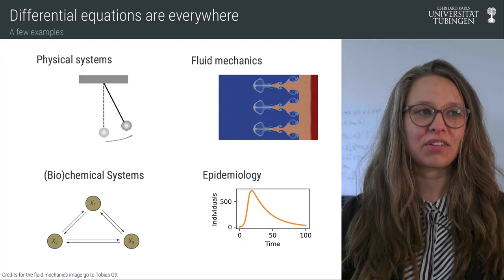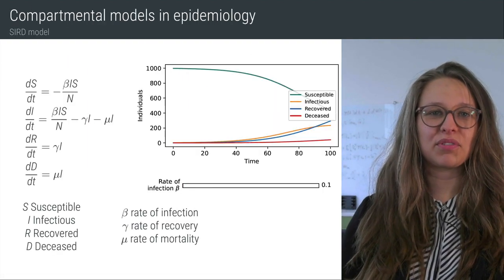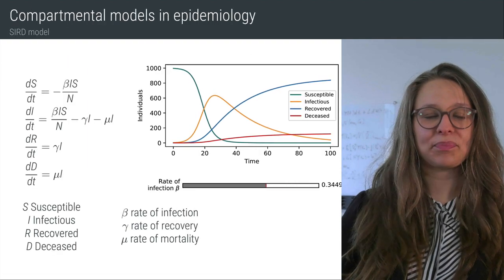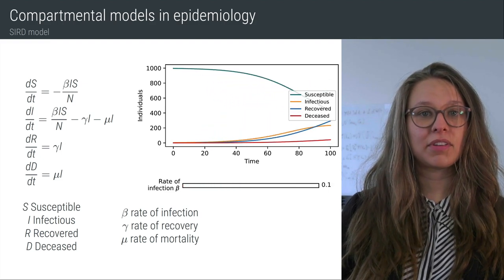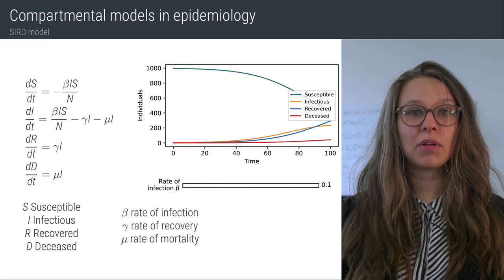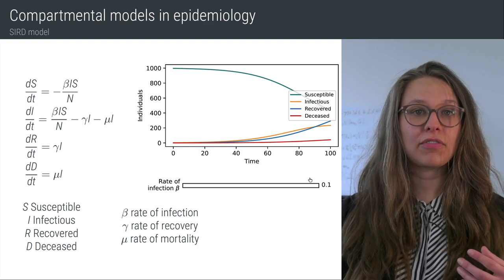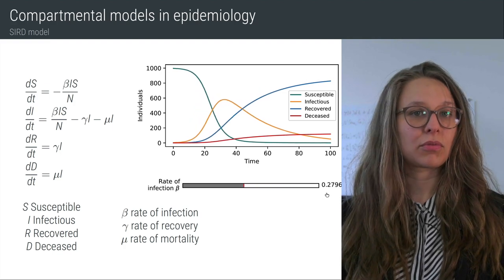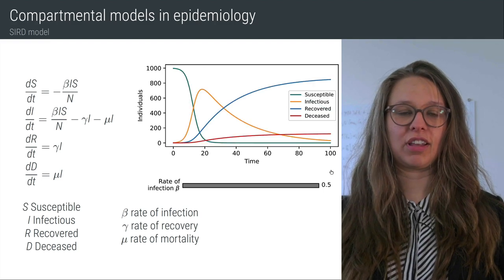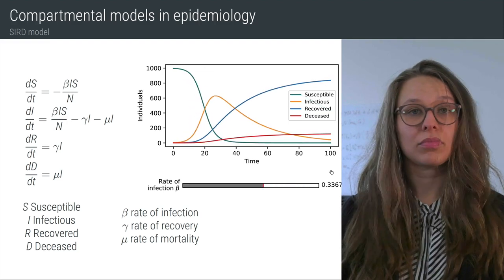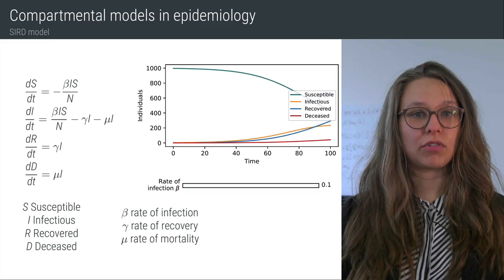But let's take a look at a concrete example: the SIRD model used for modeling an infectious disease. The SIRD model describes the number of individuals susceptible, infectious, recovered, and diseased. The differential equations shown on the left side describe this model. You don't need to care about the exact form of these differential equations right now.